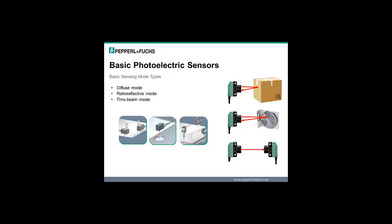Photoelectric sensors are available in many shapes, housing styles, and with numerous light sources and output types. This translates to tens of thousands of possible combinations when trying to select a photoelectric sensor. But because photoelectric sensor operation is based upon only three basic sensing modes, understanding the fundamental principles of each sensing mode provides a greater understanding of all photoelectric sensors. These principles can then be applied to any photoelectric sensor regardless of the shape, size, style, etc.